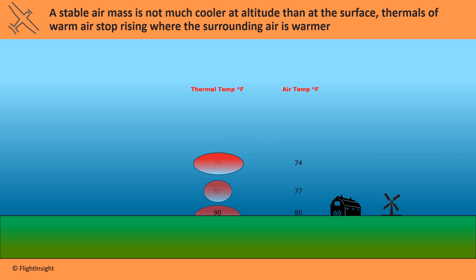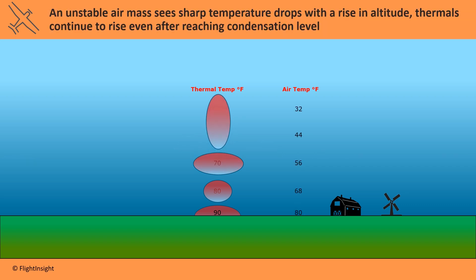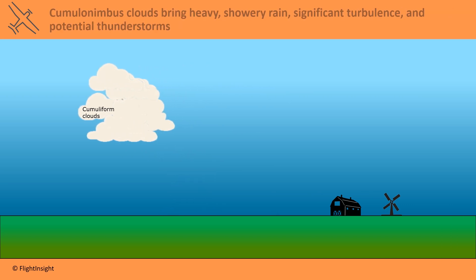An unstable air mass is one where the temperature drops off significantly as the altitude gets higher. As long as the thermals are warmer than surrounding air, they will continue to rise even after reaching the condensation level where clouds form. This causes vertical development of clouds called cumuliform clouds. They accumulate upwards. Because there's significant updrafts of thermals in cumuliform clouds, they tend to bring heavy turbulence and precipitation is heavy and showery and can even bring thunderstorms. These are the type of clouds typically seen during the summer in the United States or in tropical areas mostly.